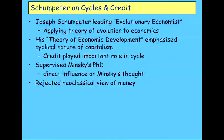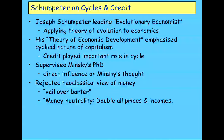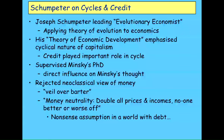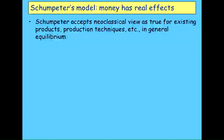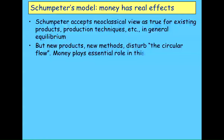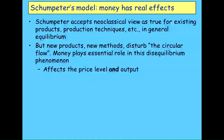Schumpeter argued that money has real effects. He accepted that if we only had existing production of existing products using existing techniques and the economy is in or near equilibrium, the neoclassical view would be true. But he said the defining feature of capitalism is new products coming along all the time, new production methods which disturb what he calls a circular flow. Money is an essential part of that disequilibrium process, which is a fundamental part of why capitalism is a powerful and successful economic system — except when it falls into a financial crisis. And this dynamic affects both the price level and the level of output.